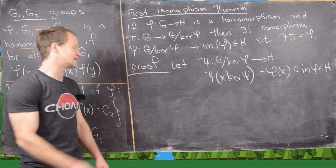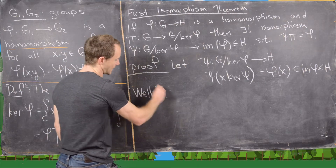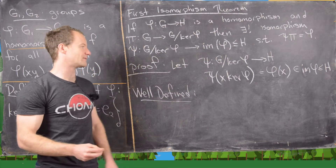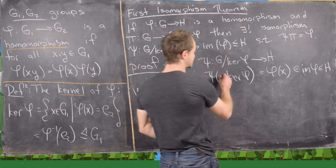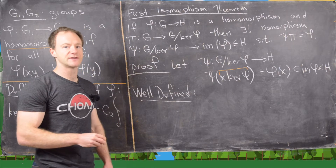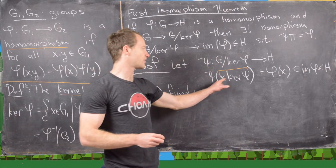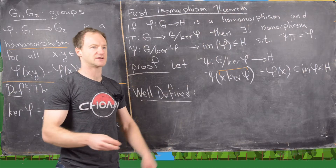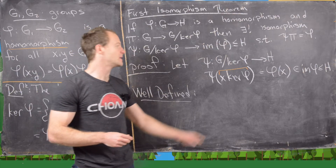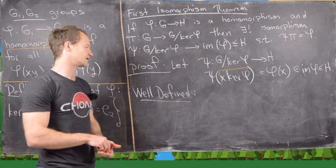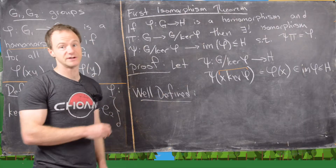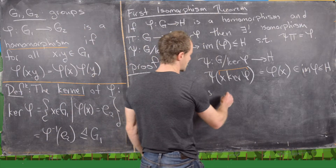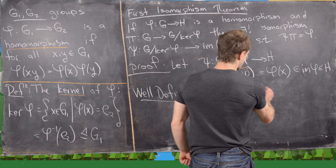The first thing to check is that psi is well-defined. A good way to think about it: look at elements from your domain and ask whether they have different names. Here, inside a quotient, there are always different names for the same coset. So we must suppose x·ker(phi) equals y·ker(phi) — the same coset with two different representatives x and y — and then show that psi gives the same output.